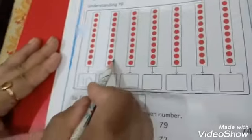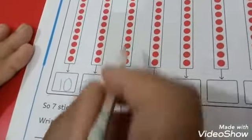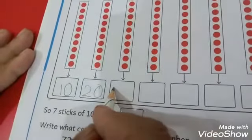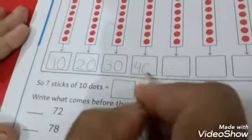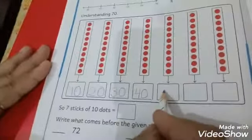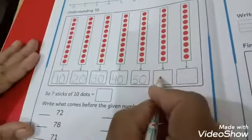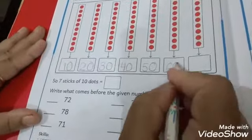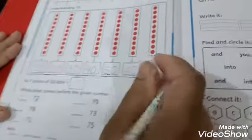Two tenths means 20. Three tenths means 30. Four tenths means 40. Five tenths, 50. Six tenths means 60. And seven tenths means 70.